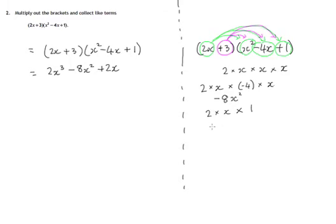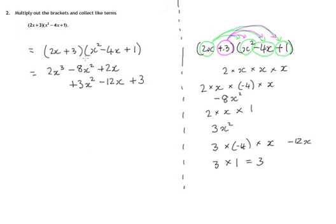So 3 times x squared, that's just 3x squared. There's no negative in there, so it's plus 3x squared. Let's do positive 3 times the negative 4x, positive 3 times the negative 4 times the x. Well, that's negative 12, 3 times negative 4x, negative 12x. And then finally, 3 times the positive 1, so 3 times 1 is just 3, so there's plus 3. So that's your 3 times x squared, 3 times negative 4x, 3 times the positive 1.